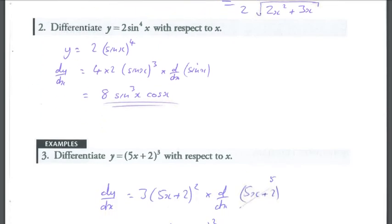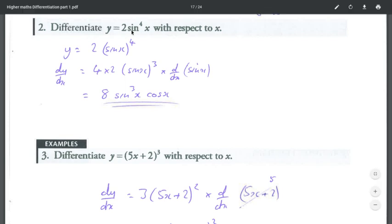Here we have differentiate y equals 2 sine to the power 4x with respect to x. This is a very special example because we need to know that sin to the power 4x actually means sine x all to the power 4. This is just the way that we write it and the rest of the world write it, but we need to understand that that means sine x all to the power 4.